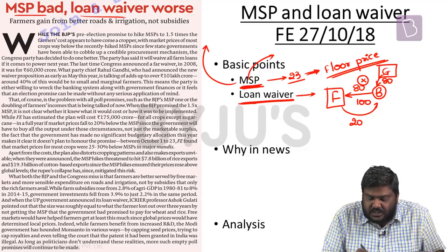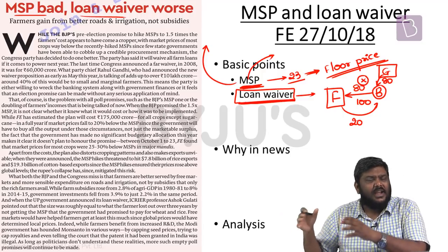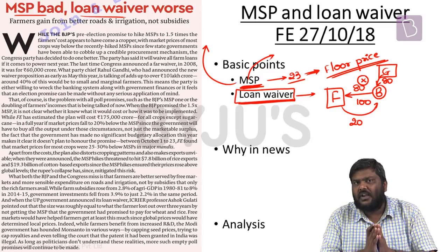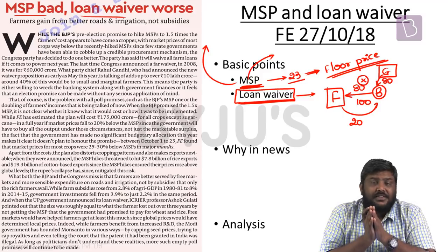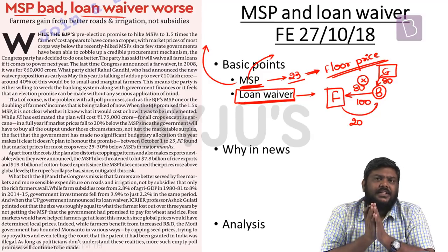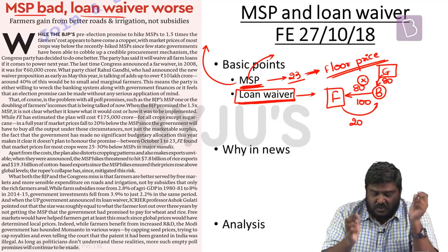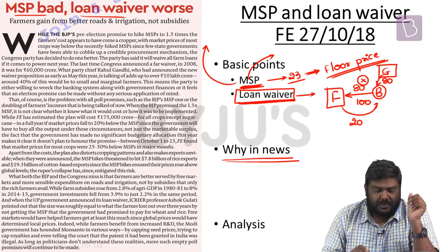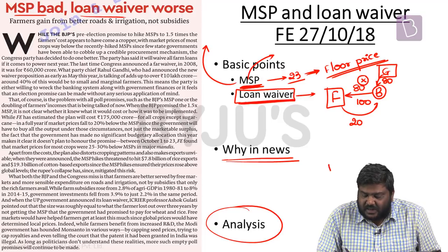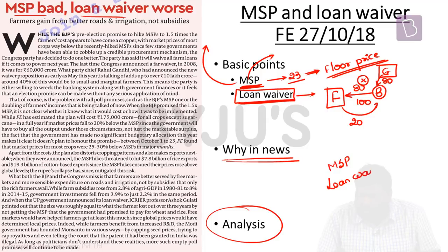State governments have been announcing loan waivers, starting with Uttar Pradesh elections and snowballing to various other states. Very recently, Mr. Rahul Gandhi stated that if Congress comes to power post the 2019 elections, they will provide a loan waiver for all agriculture loans pan-India. The article argues that neither higher MSP nor loan waivers will truly benefit farmers - both are considered bad policies.